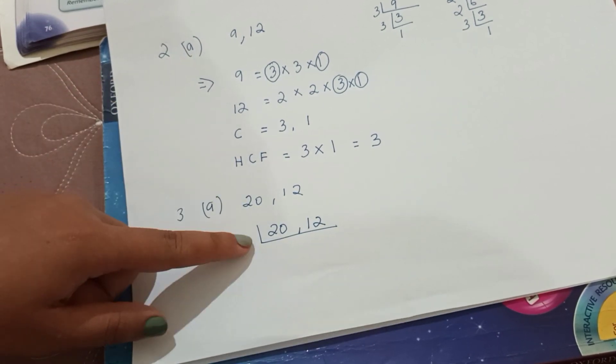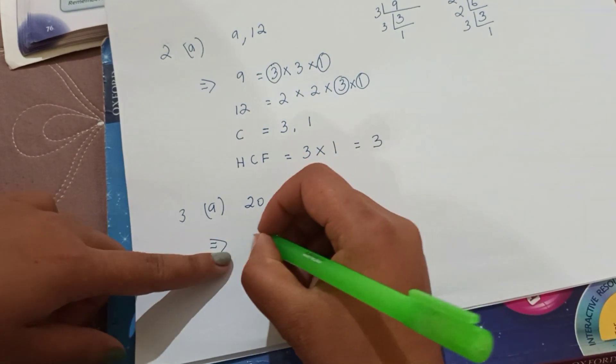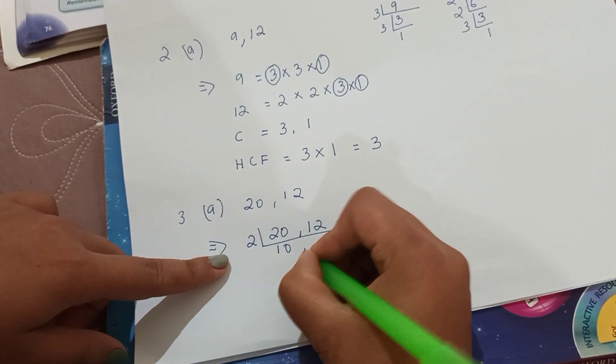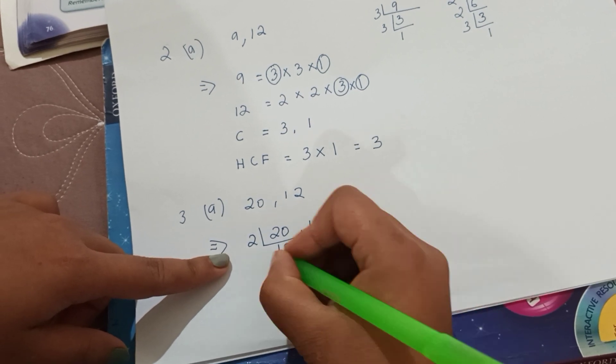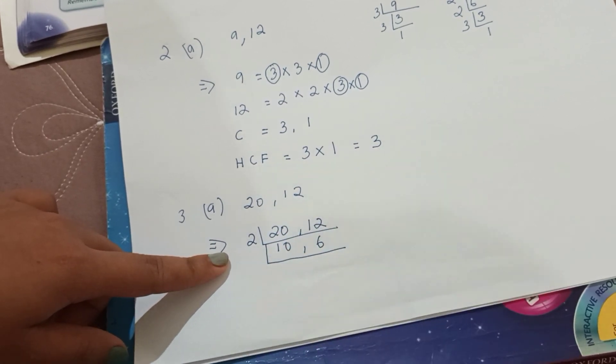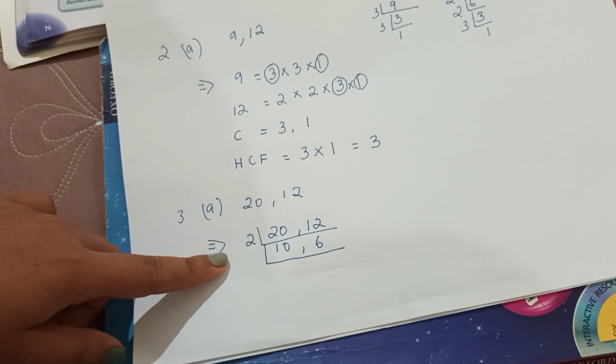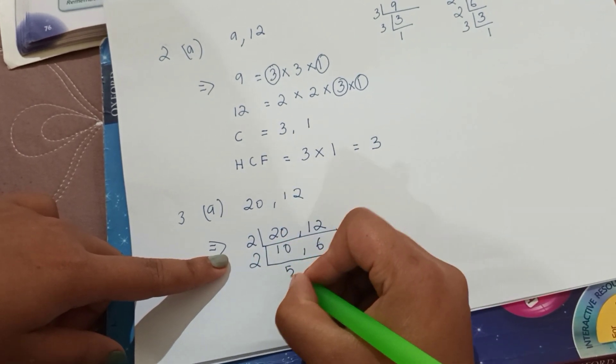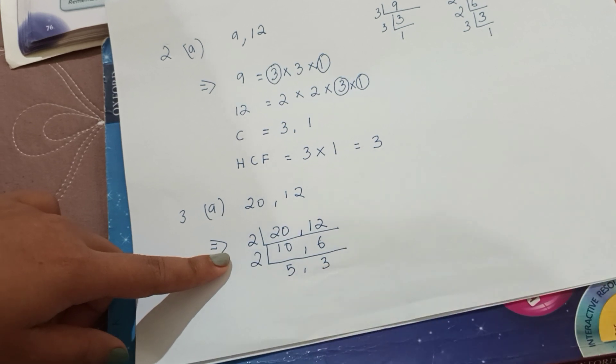So we can divide by 2. 20 and 12 can be divided by 2. 2 times 10 is 20, 2 times 6 is 12. Then 10 and 6, we can divide by 2 again. 2 times 5 is 10, 2 times 3 is 6.